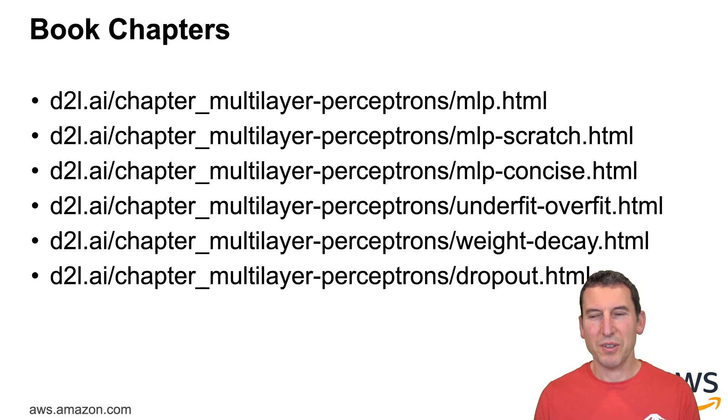There's a lot more content where this came from, so you should look at the multilayer perceptrons chapter, and this talks a little bit about dropout, weight decay, underfitting, overfitting, and how to actually design an MLP. So with that, we've come to the end of the first chapter of the Crash Course, and going forward, we'll now look at computer vision.